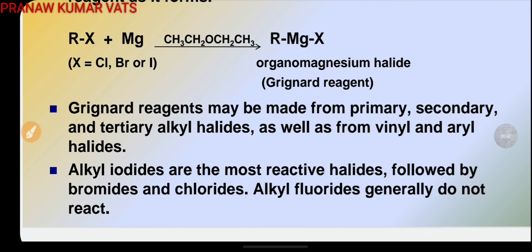Grignard reagents may be made from primary, secondary, and tertiary alkyl halides, as well as from vinyl and aryl halides. Alkyl iodides are the most reactive halides, followed by bromides and chlorides. Alkyl fluorides generally do not react.